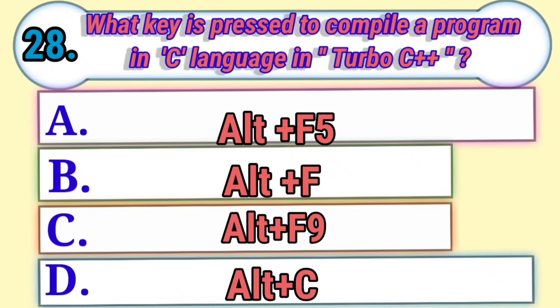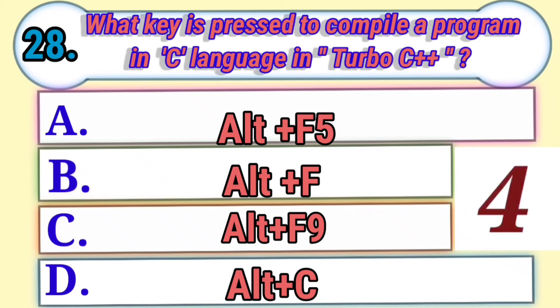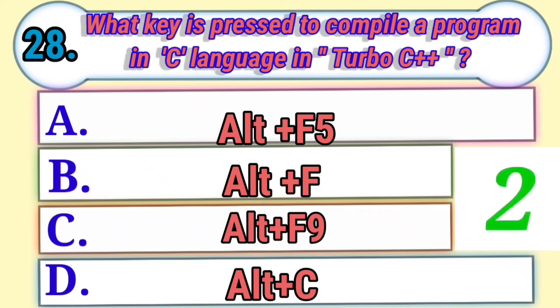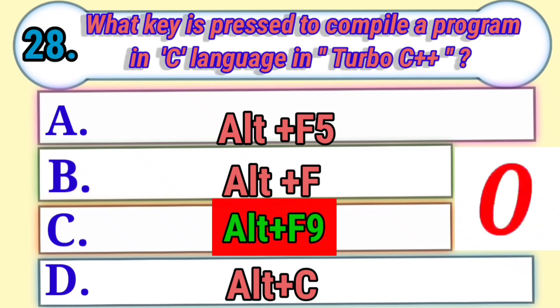What key is pressed to compile a program in C language in Turbo C++? Answer: Alt plus F9.